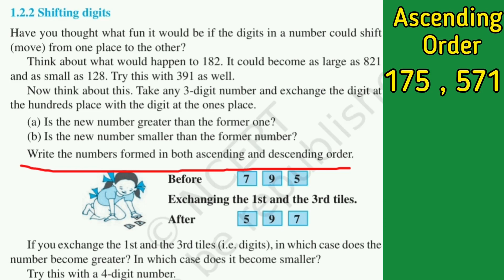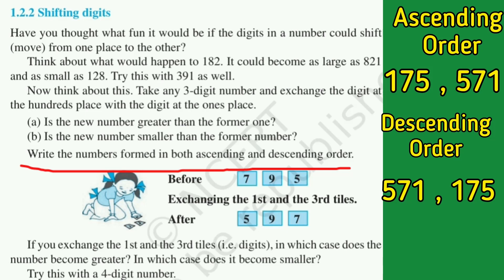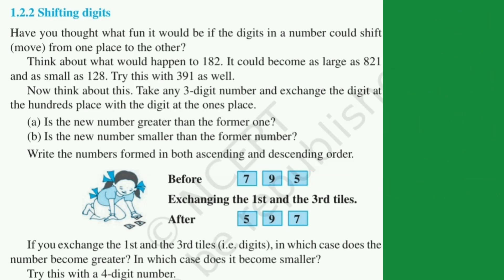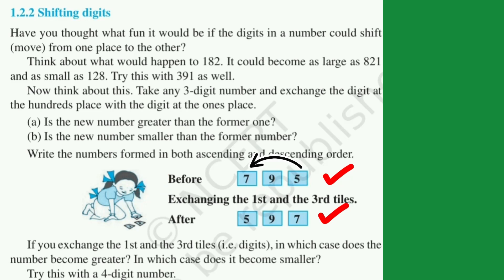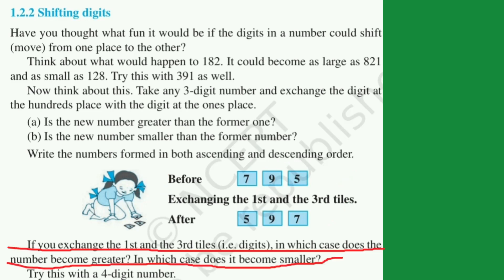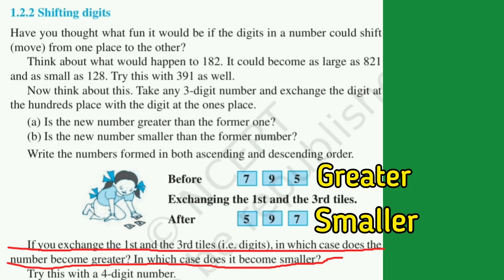Is the new number smaller than the former number? Yes, 175 is smaller than 571. If we arrange in ascending order, the first number will be 175 and the next will be 571. If we arrange in descending order, the first number will be 571 and the next will be 175. Let's look at the book example: the number is 795. After exchanging hundreds and ones place, you get 597. Before exchanging, the number 795 was greater; after exchanging, 597 is smaller.